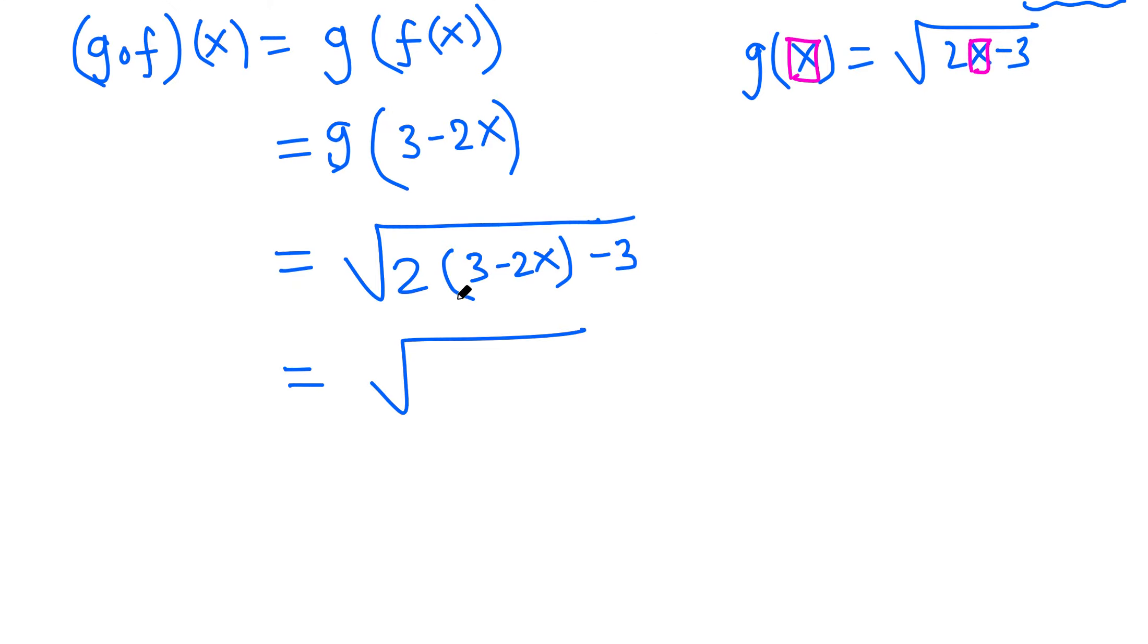Let's simplify. This is 2 times 3, which is 6 minus 4x minus 3. These are like terms, so 6 minus 3 is 3, giving us √(3 - 2x). This is the composite function.